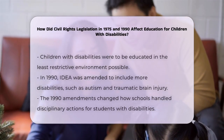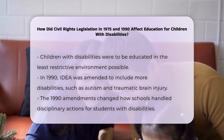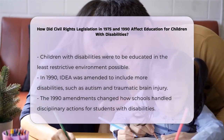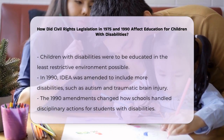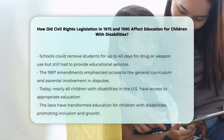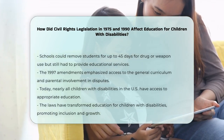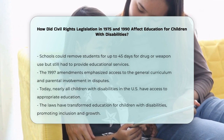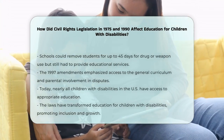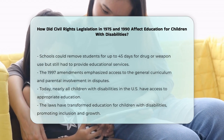For example, schools could remove a student from school for up to 45 days if they were involved in drug or weapon use, but they still had to provide educational services during that time. The 1997 amendments to IDEA further refined these rules, emphasizing access to the general curriculum and providing more opportunities for parental involvement in resolving disputes with schools. These changes ensured that schools continued to improve their services for children with disabilities, making sure they had the best chance to succeed in school and beyond.